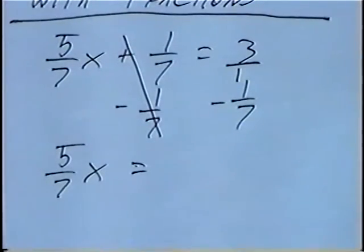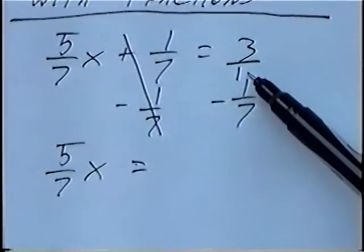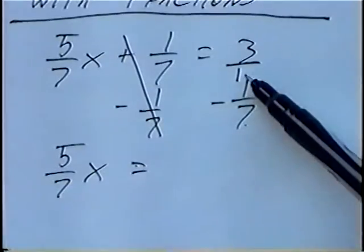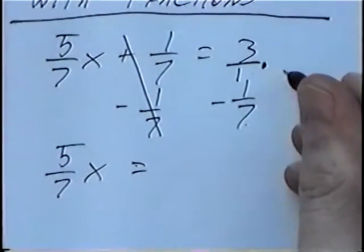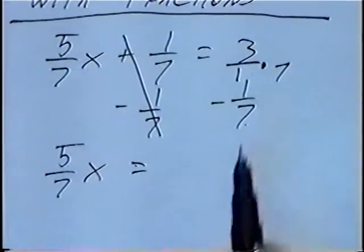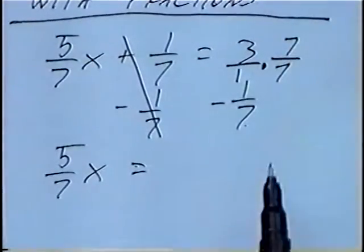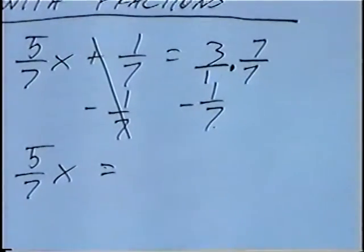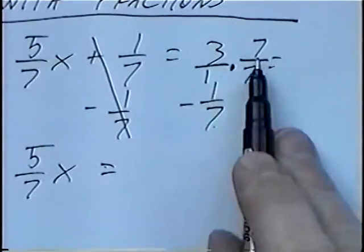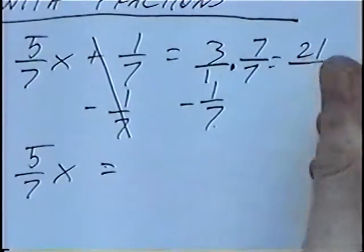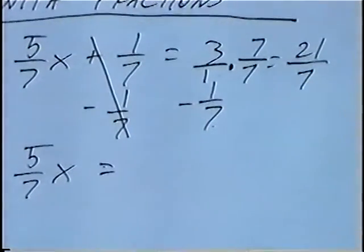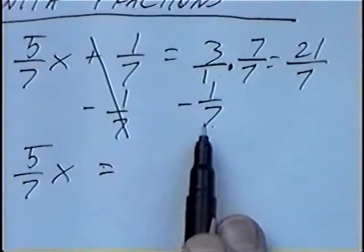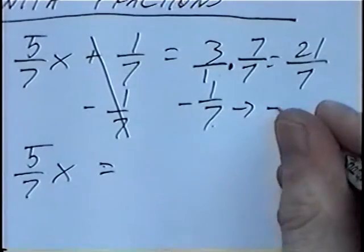If you remember, before we can subtract fractions, the denominator, or bottom number, has to be the same. In this case, if we have 7 and 1, the top number we can change to a 7 by multiplying by 7. We'll multiply both the denominator, which is the bottom number, and the numerator by 7. So 3 times 7 would be 21, and 1 times 7 would be 7. So 3 over 1 we can change to 21 over 7, and we're still subtracting minus 1 over 7.